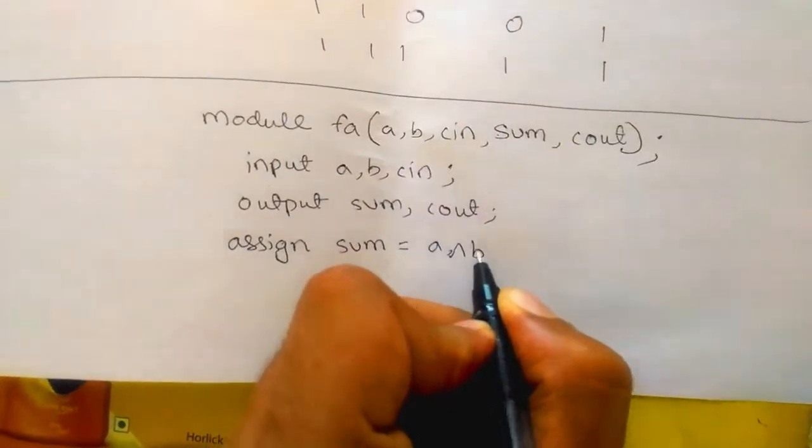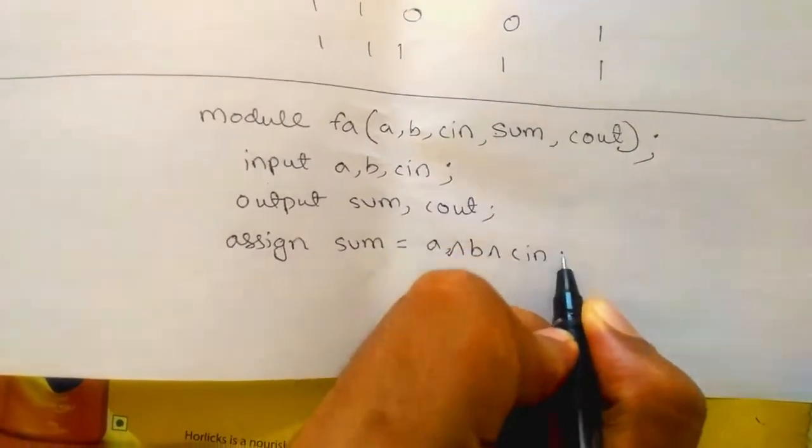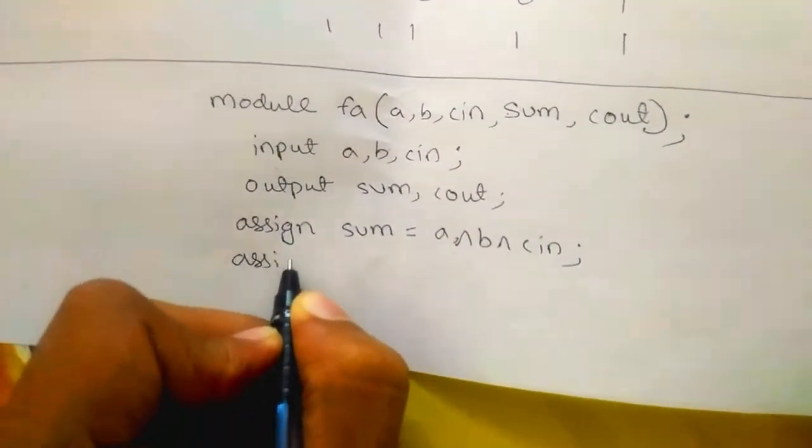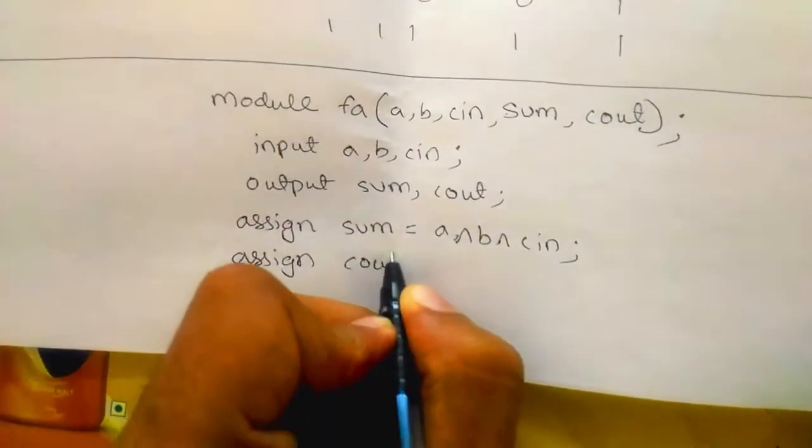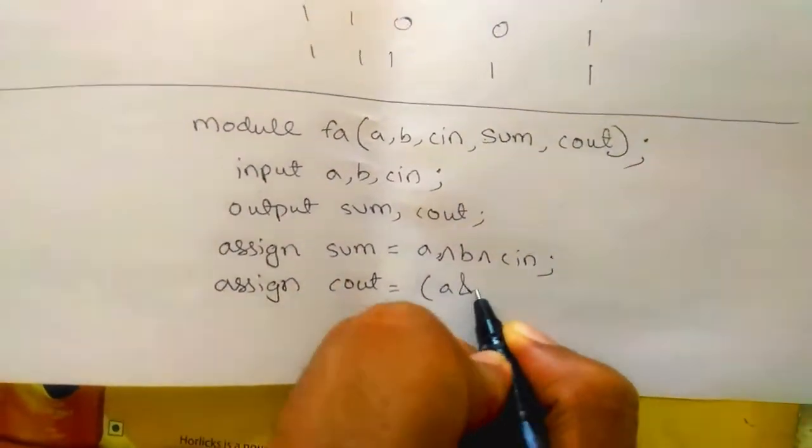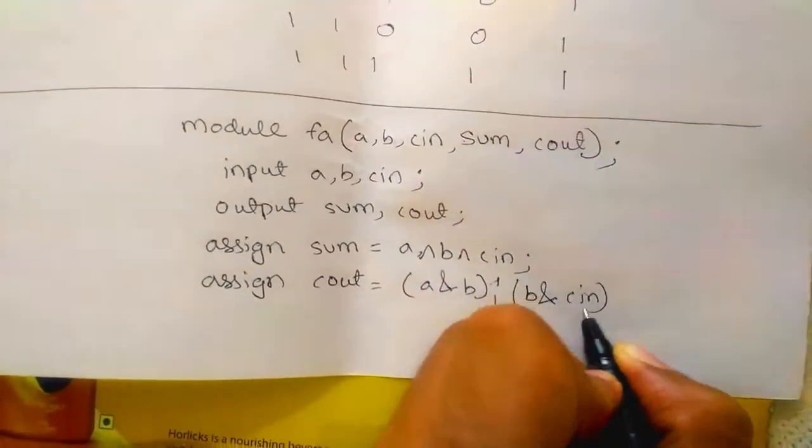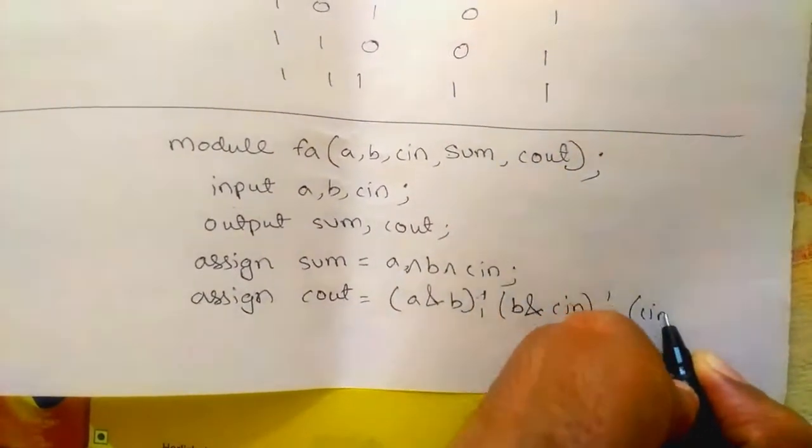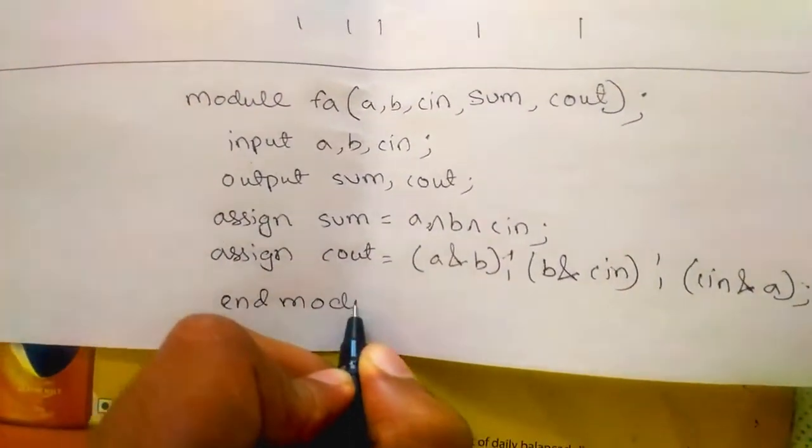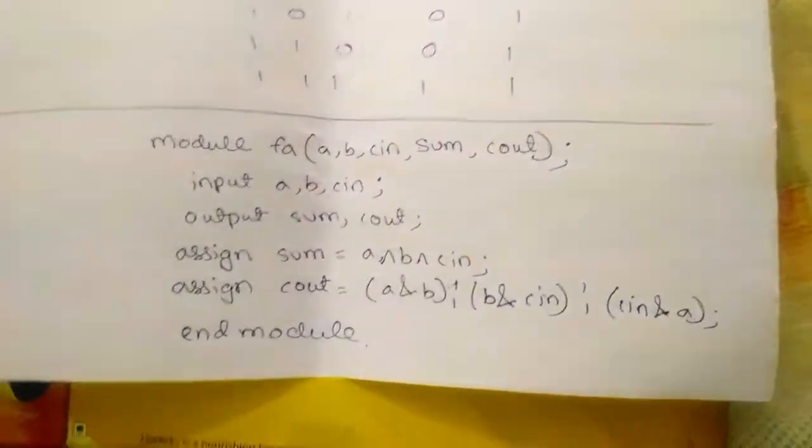We are using assign statement. Assign sum equals a xor b xor cin. And assign cout equals a and b or b and cin or cin and a. End module.